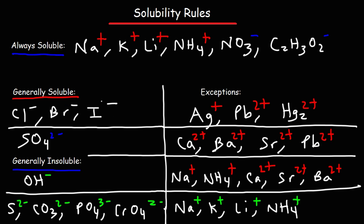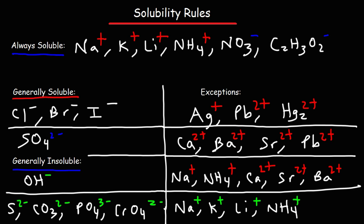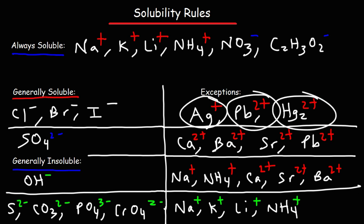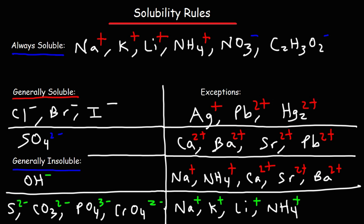The halides — like chloride, bromide, and iodide — are generally soluble. Fluoride is a little bit different. The exceptions for those are silver, lead(II), and mercury(II). So if you were to see PbBr₂, that would be insoluble, because lead is an exception for bromide.